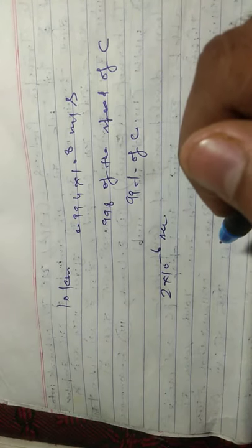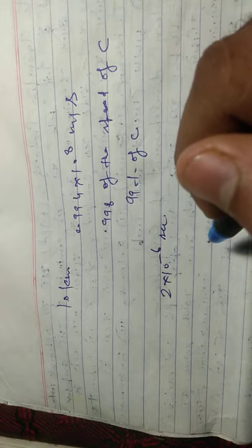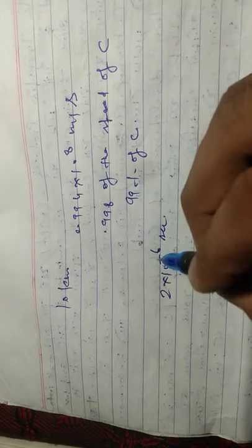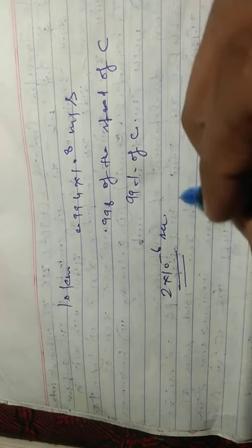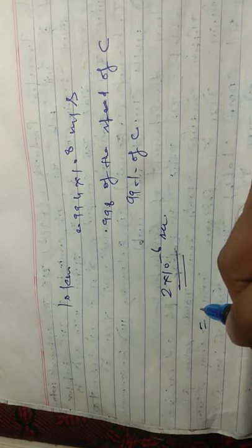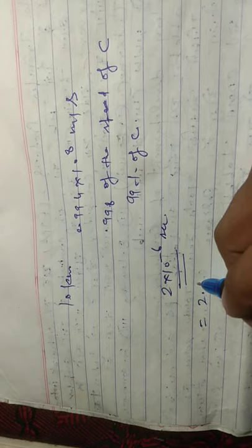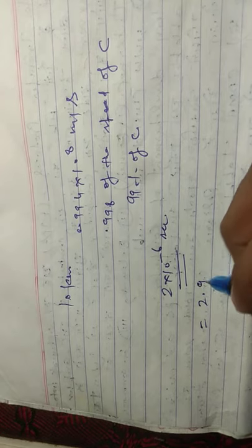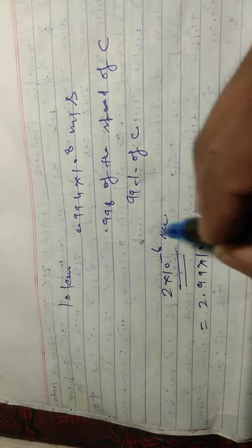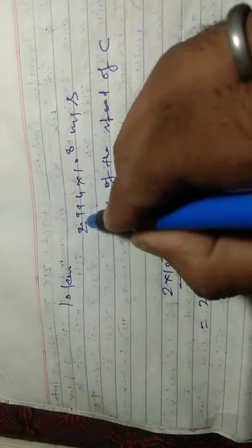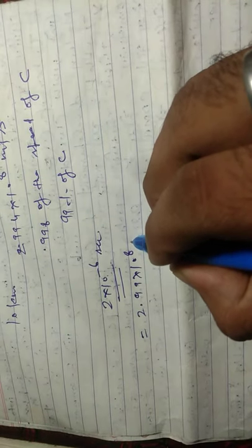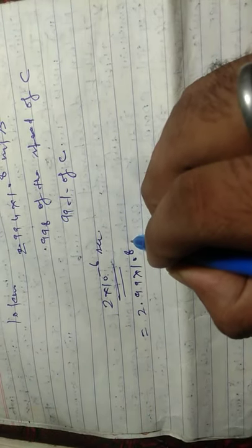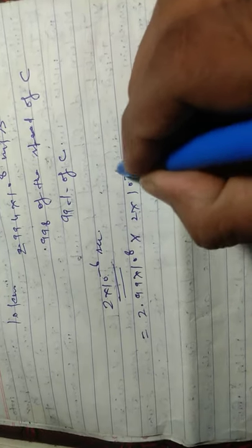So in this time they can travel a distance only which is equal to 2.99 × 10^8 meters per second (the speed of muons) times 2 × 10^-6 seconds.